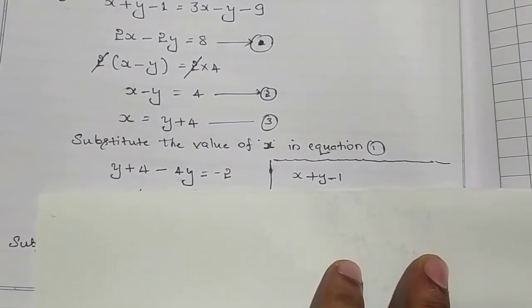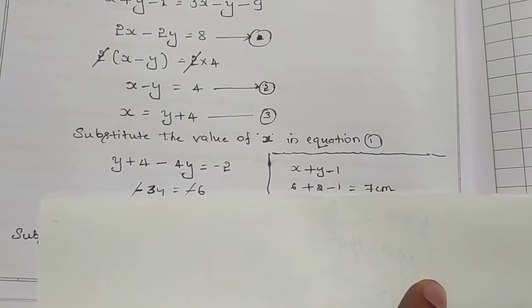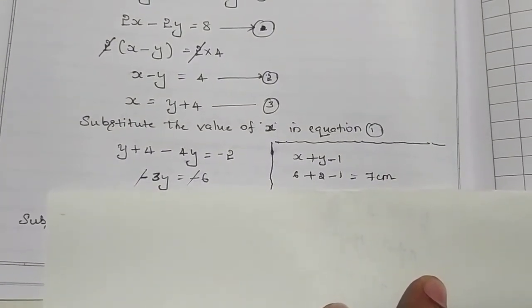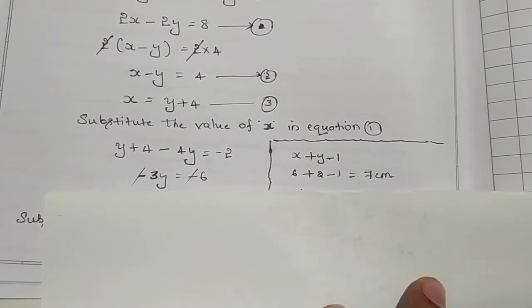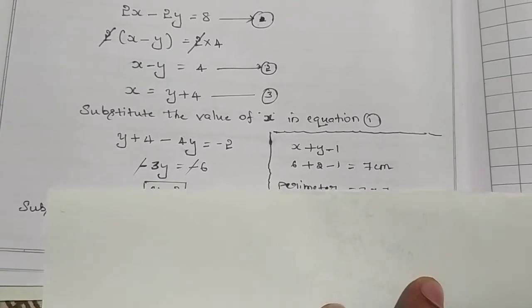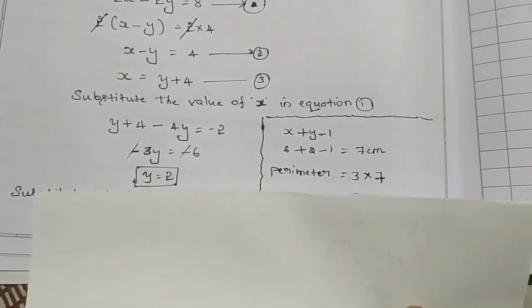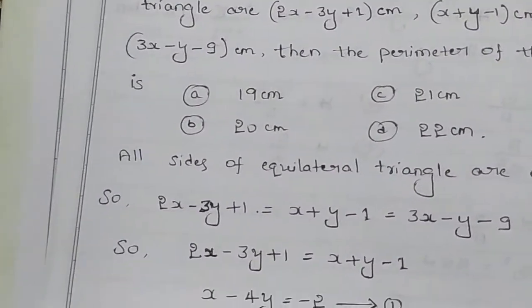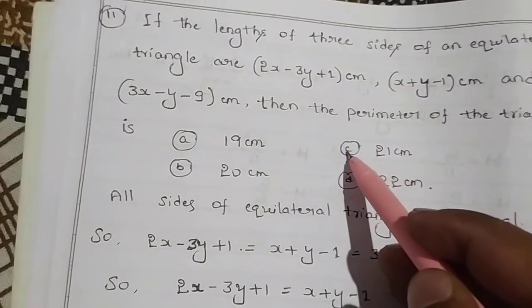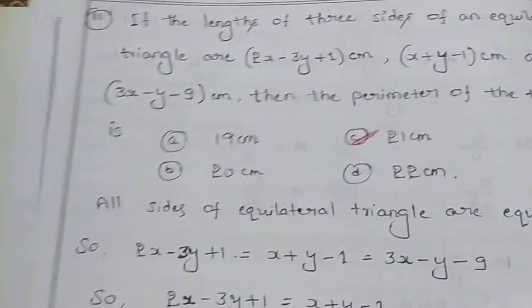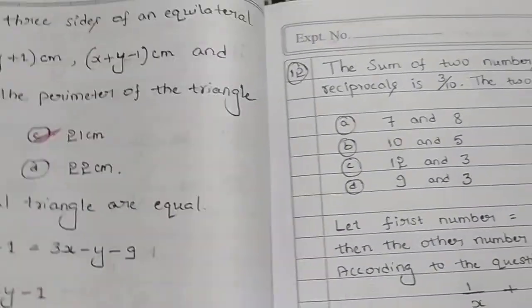Now substituting x equals 6 and y equals 2 into x plus y minus 1: 6 plus 2 minus 1 equals 7 centimeters. Since all sides are equal in an equilateral triangle, the perimeter equals 3 into 7, which is 21 centimeters. Therefore the answer is Option C, 21 centimeters.